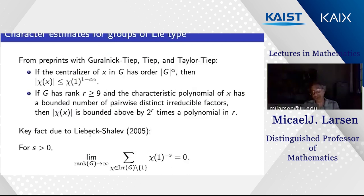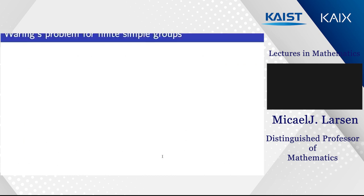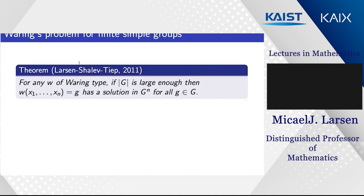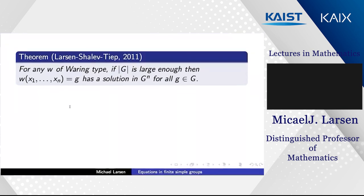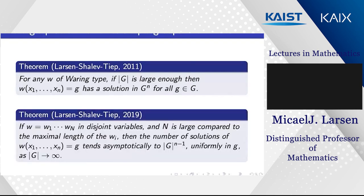The theorem is: if w has Waring type and G is large enough, then the word map w is surjective. This shows there is at least one solution. At the time we proved this we were quite happy with it, since the original question was just whether at least one solution exists. But what we really expect for most words is what I said at the beginning: for each g on the right-hand side, we get approximately the same number of solutions — about |G|^{n-1}.